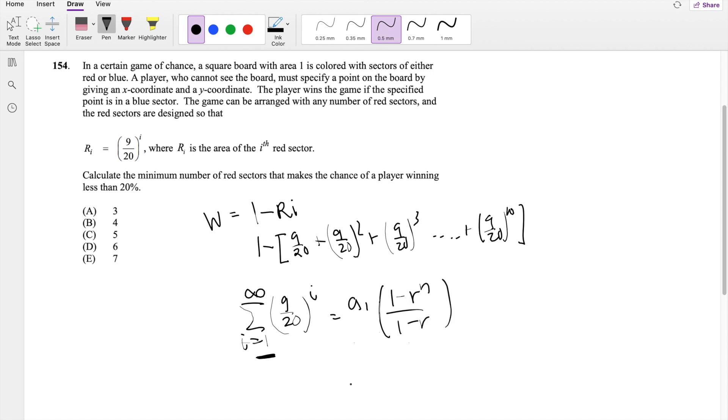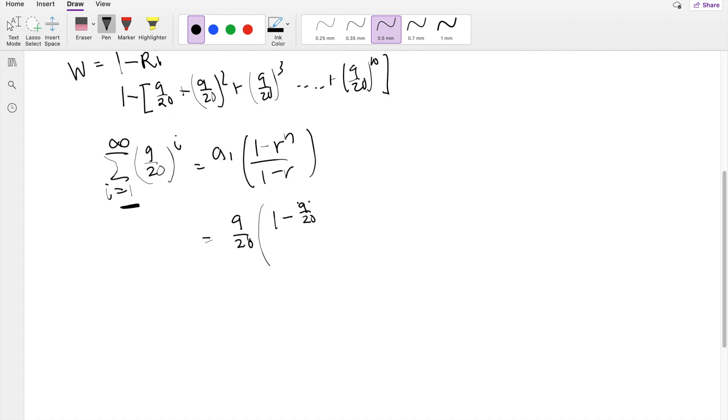Our initial value is 9 over 20, our rate is also 9 over 20, so it's 9 over 20 to the N power over 1 minus 9 over 20.